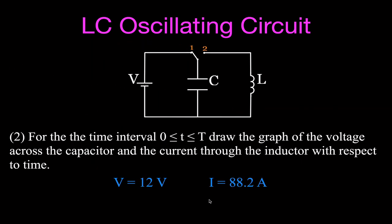Now for number two, which is an extension of number one. For the time interval from t = 0 to one full period T, we're going to draw the graph of the voltage across the capacitor and the current through the inductor with respect to time. I'll use the values from the previous example: a 12-volt source and a maximum current of 88.2 amperes.